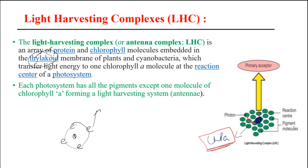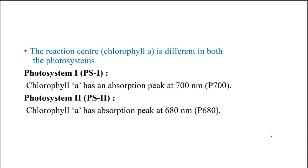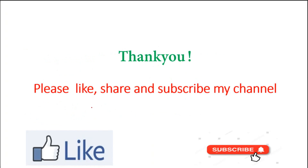Depending upon the reaction center chlorophyll molecule and which wavelength of light it absorbs, we classify photosystems into two parts: photosystem 1 and photosystem 2. In photosystem 1, the reaction center is a chlorophyll molecule that absorbs 700 nanometer wavelength light, whereas in photosystem 2 the reaction center is chlorophyll A that absorbs 680 nanometer wavelength light. So this is all for today — if you like my channel, please like, share and subscribe. Thank you.